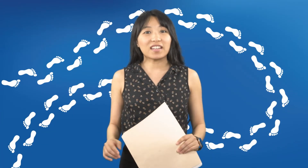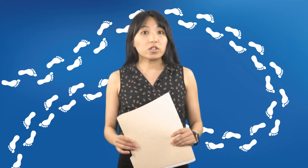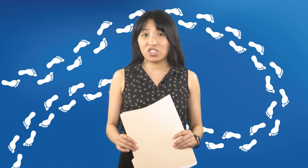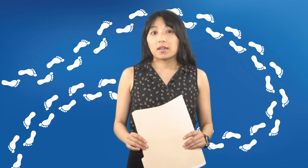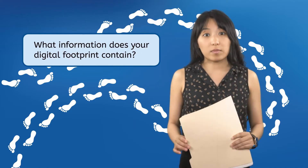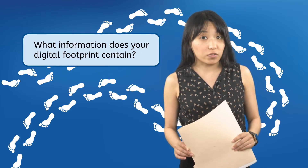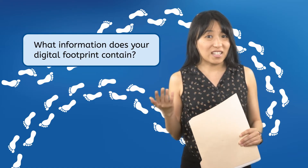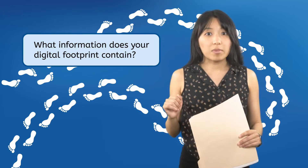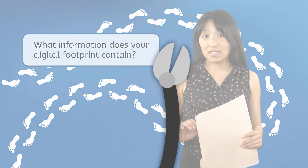Each bit of data in Angie's digital footprint was like a puzzle piece, and we could put the puzzle together to figure out a lot about Angie that she may not want strangers knowing. Think about the things you do and post online — what information do you think your digital footprint contains? Is it information you want other people finding out about you? Would they be able to put together the puzzle from the pieces you provided?